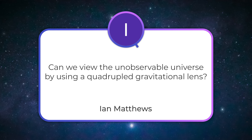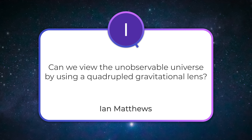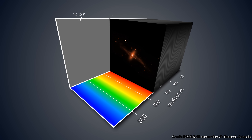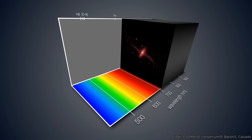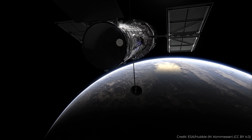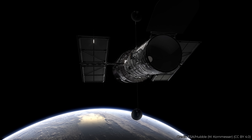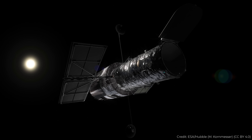Can we view the unobservable universe by using a quadrupled gravitational lens? A gravitational lens acts like a natural telescope lens — it allows you to magnify more distant objects with greater clarity and perform spectroscopy to understand the chemicals in that more distant galaxy. It's what allowed the Hubble Space Telescope to see galaxies less than a billion years after the Big Bang. But gravitational lenses still don't let you see anything moving faster than the speed of light — so it allows you to see things within the observable universe with higher resolution.